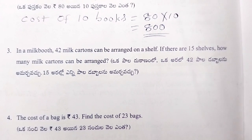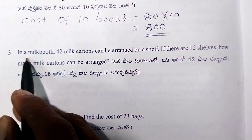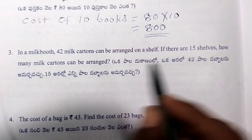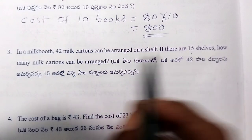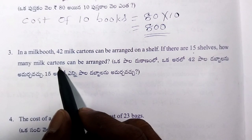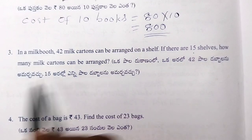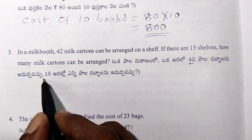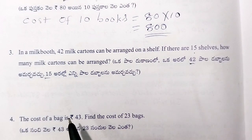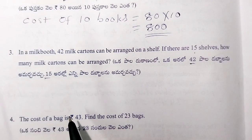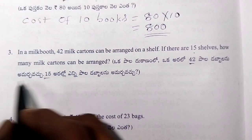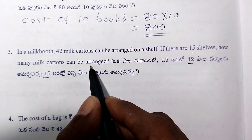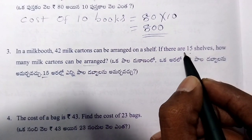Next, in the milk booth 42 milk cartons can be arranged on a shelf. If there are 15 shelves, how many milk cartons can be arranged? The number of milk cartons arranged in 15 shelves.